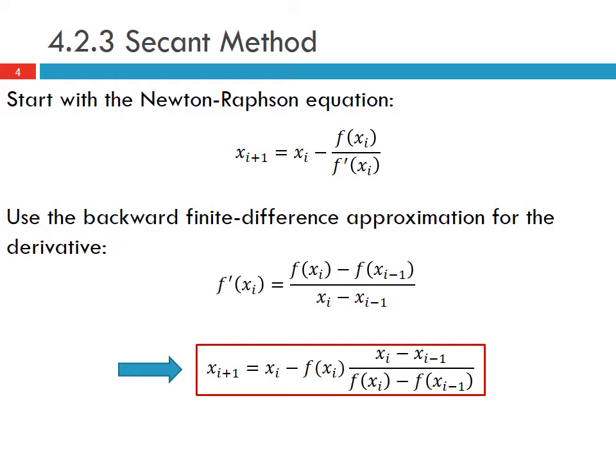If we plug this into our previous equation with this approximation of the derivative, then our next estimate x_{i+1} equals x_i minus f(x_i) times [x_i - x_{i-1}] divided by [f(x_i) - f(x_{i-1})]. This is the formula that describes the iterations for the secant method.